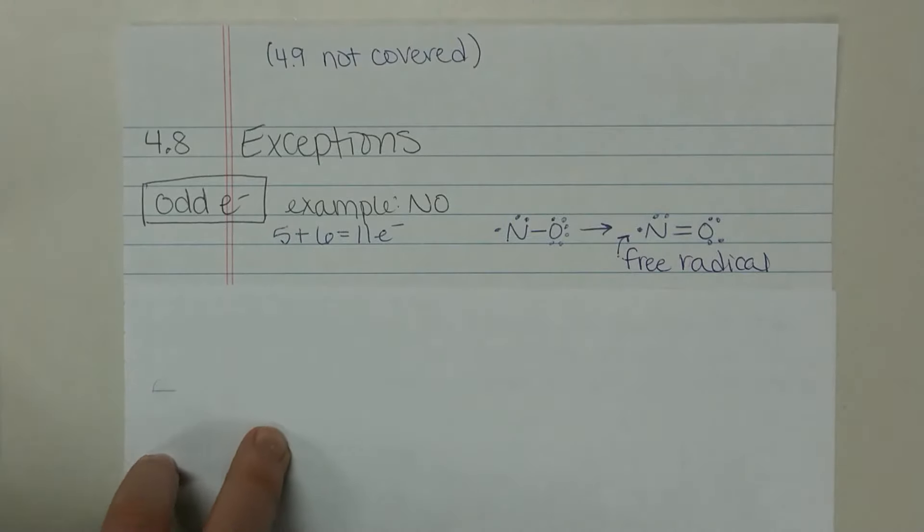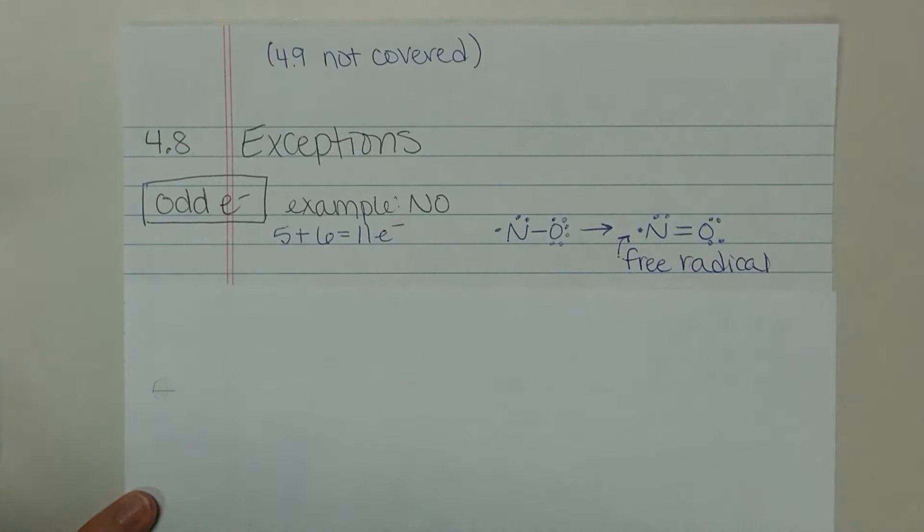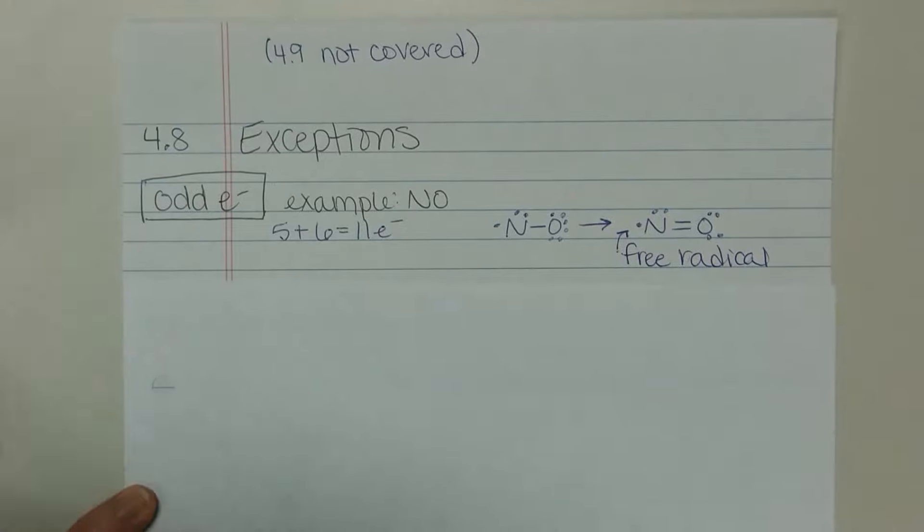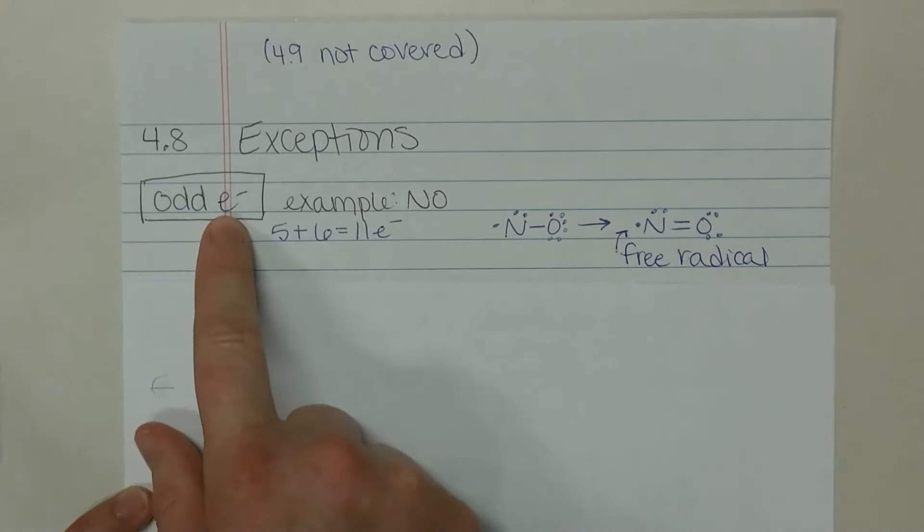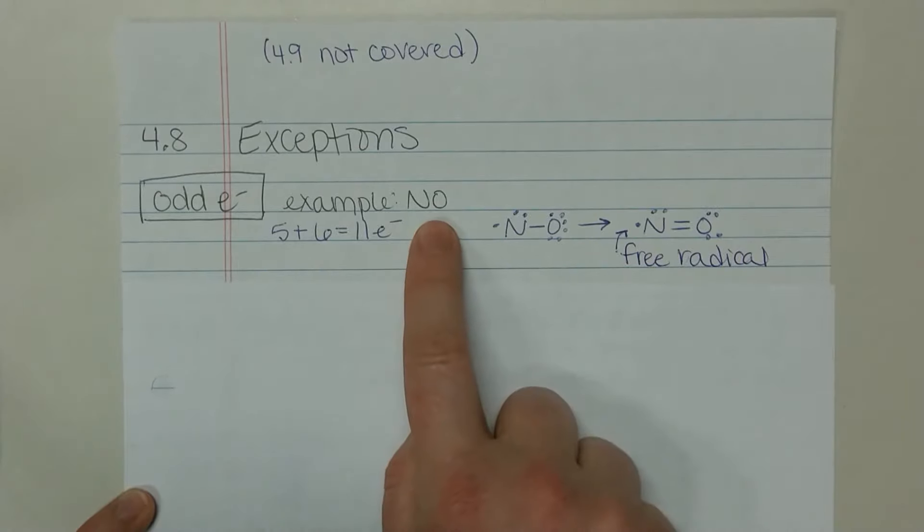So another quick video for you to finish out chapter four. There are some exceptions to our Lewis structure rules that we had started with. One of them is on occasion you'll have an odd electron that most often is going to happen with nitrogen, sometimes maybe carbon, but really nitrogen is where you're going to see it.